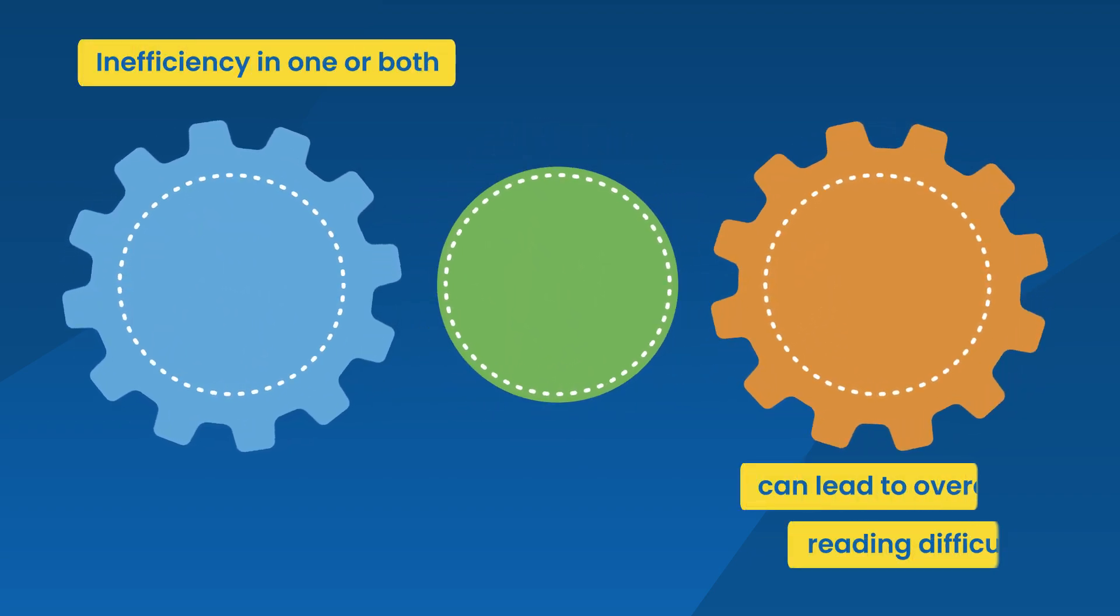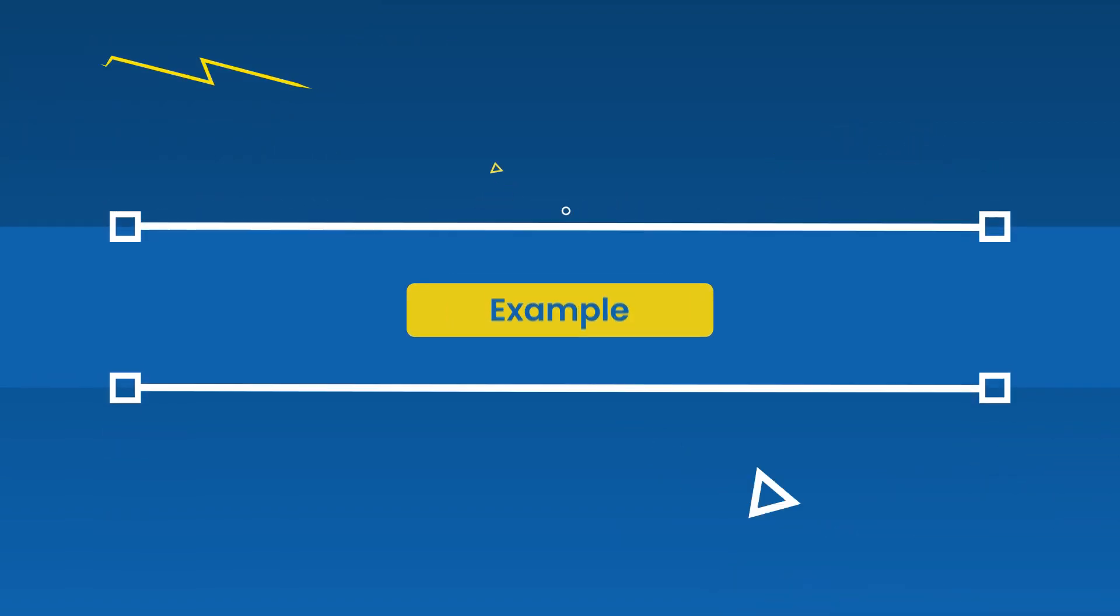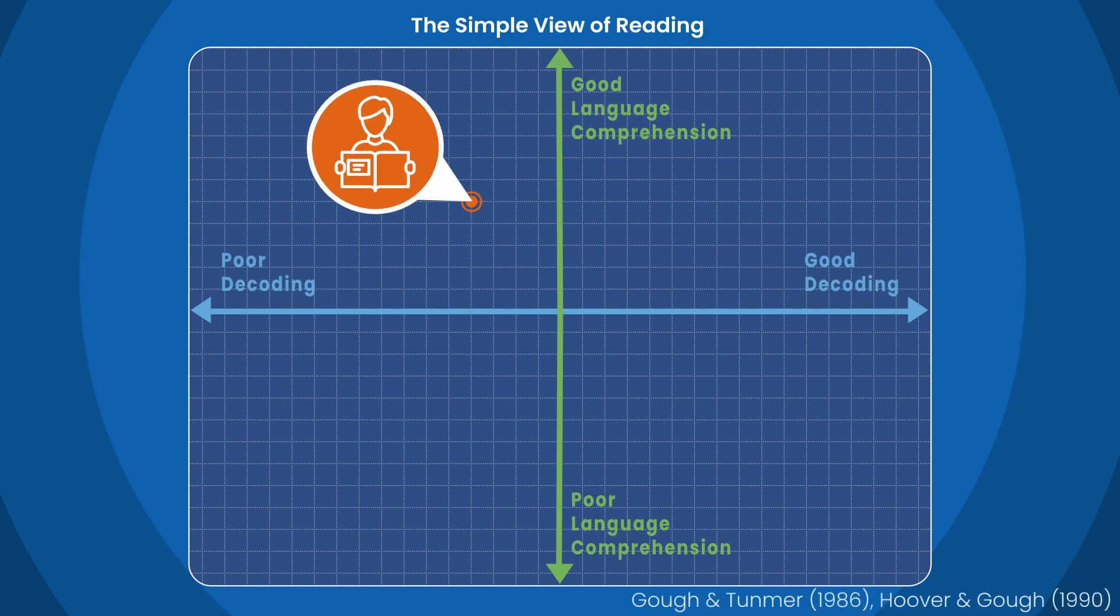Inefficiency in one or both of these components can lead to overall reading difficulties. For example, a student that struggles with decoding may be able to understand a story that is read to them, but may struggle to decode words accurately and quickly enough to support their understanding.